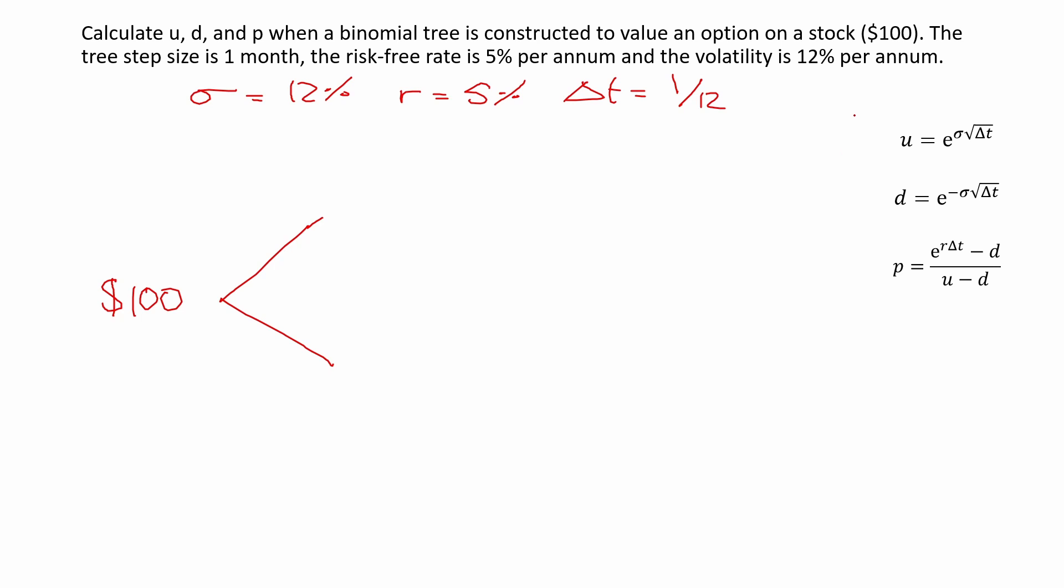Now, as you can see on the right-hand side, we have the formulas for u and d given the volatility. So as you can see, all we need is the volatility and the tree step size to find out these values. Remember the definition of u: u is the magnitude of an up jump, so by how much the stock price goes up. And d is the magnitude of a down jump, so by how much the stock price goes down.